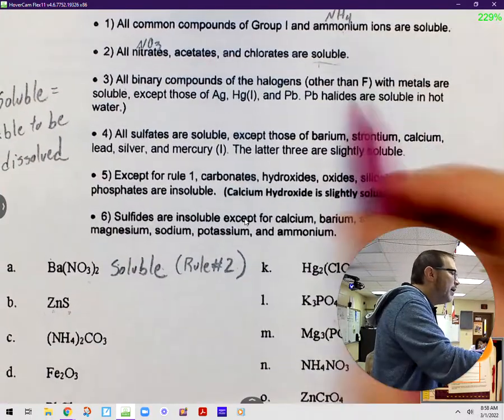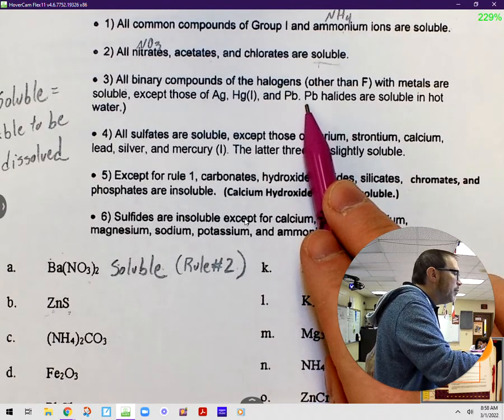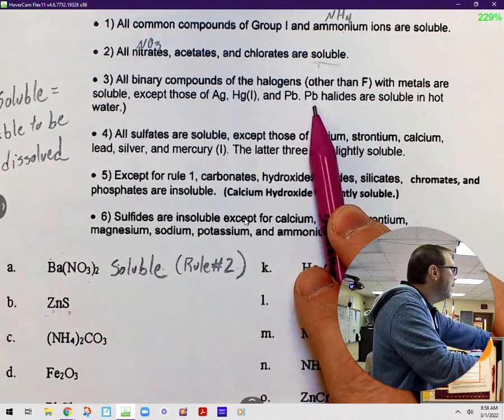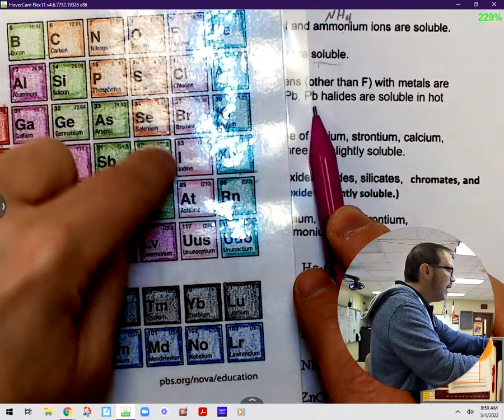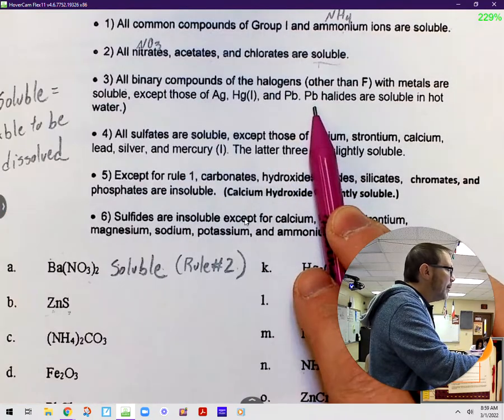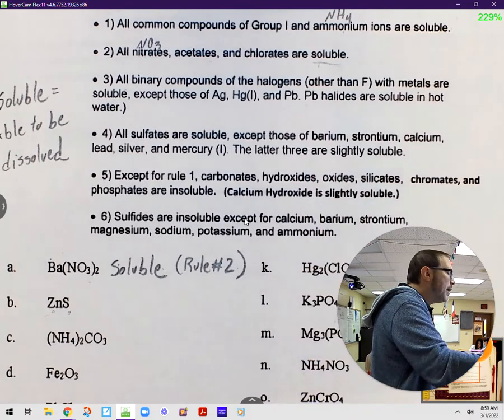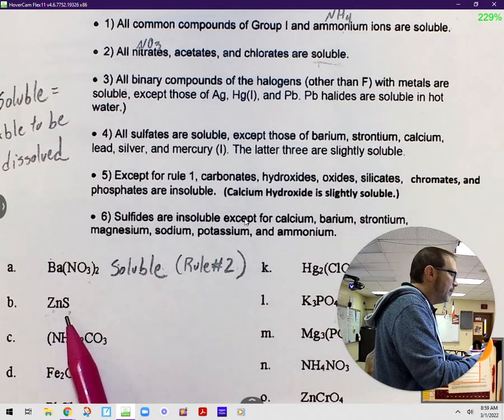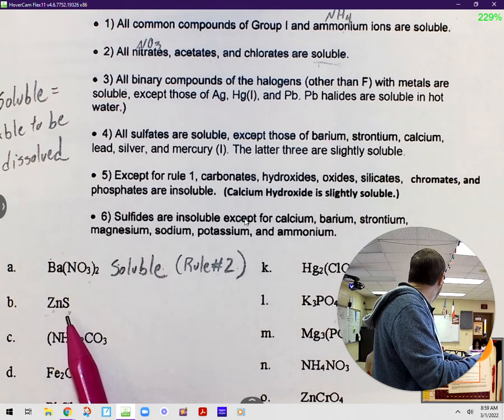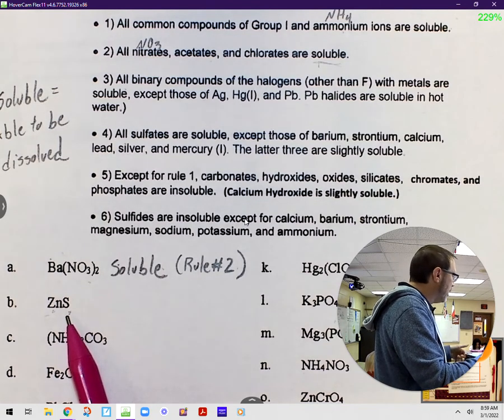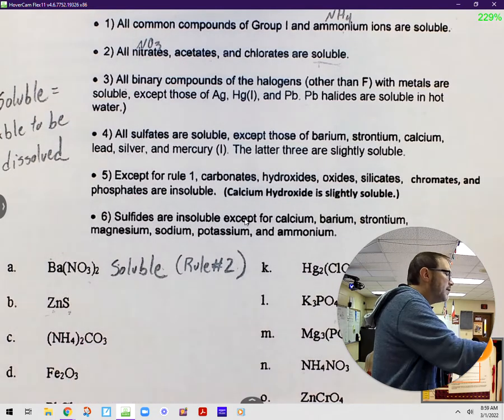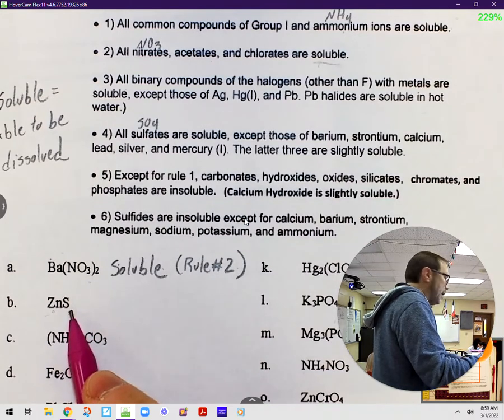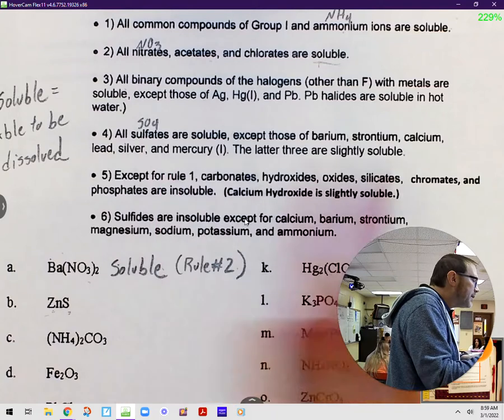I think it's important to mention here, this little bit right here, that lead halides, PB halides, are soluble in hot water. So if you run into a compound of lead and one of these like chlorine, bromine, iodine, etc., you need to be sure to write soluble in hot water. But that's not us right now. So we move on to rule number 4. All sulfates are soluble. Now wait a minute. Is this a sulfate? It's got sulfur in it. Go find sulfate for me on your blue chart. What's the formula for it? SO4. So sulfate is SO4.